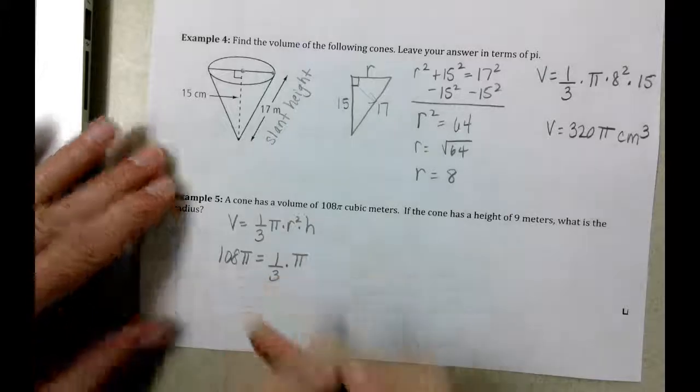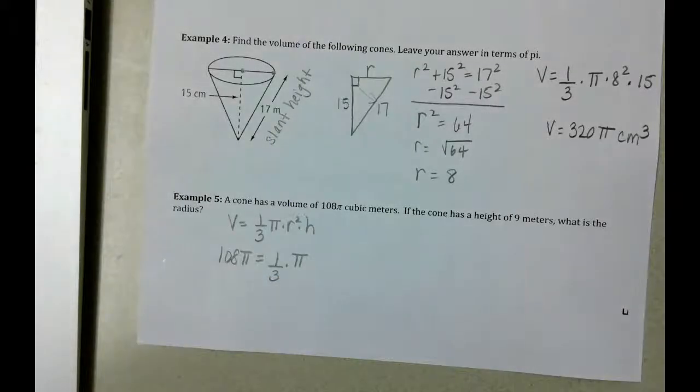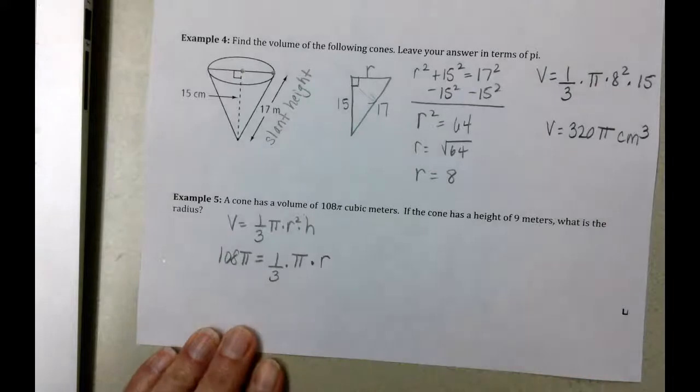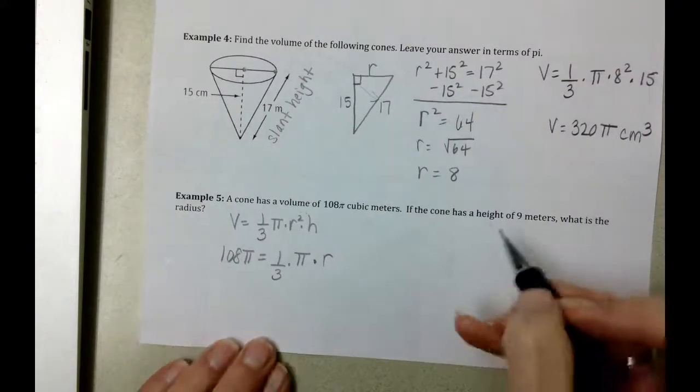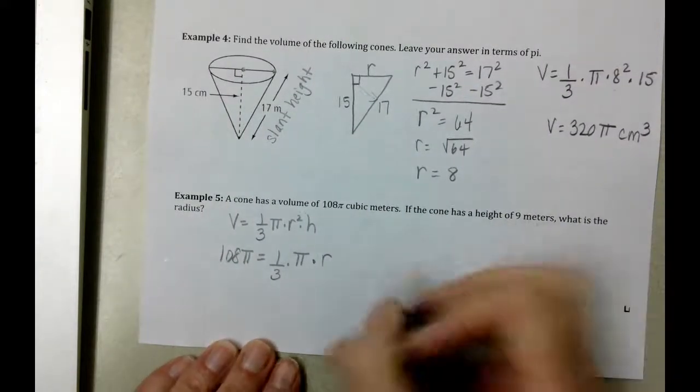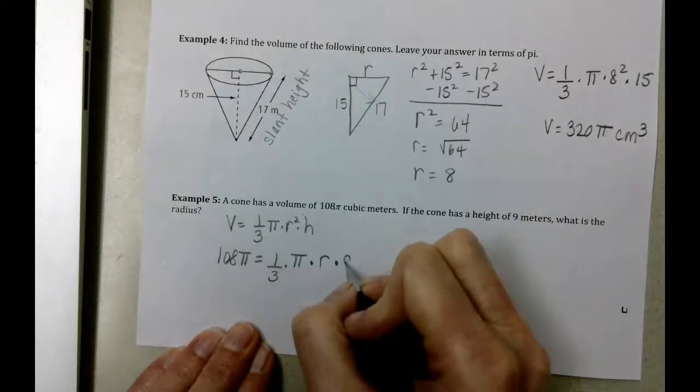The 1/3 and the pi are still there. We don't know what the radius is, but we do know that the height of the cone is 9.